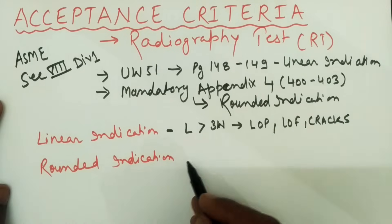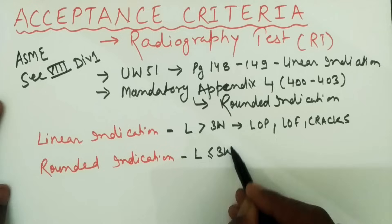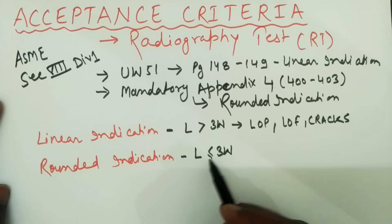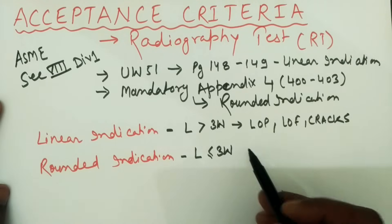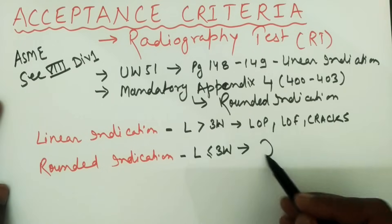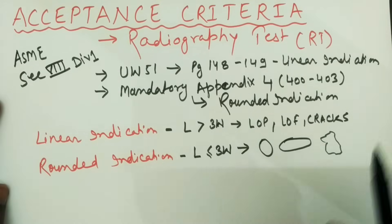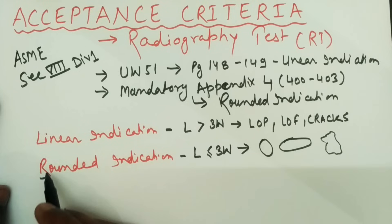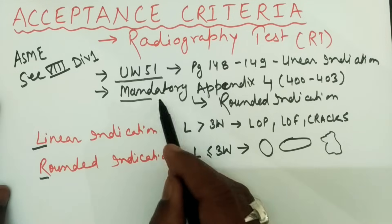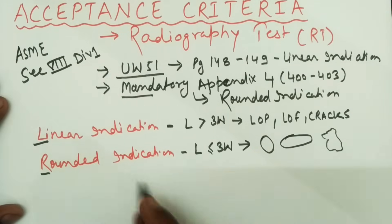In a rounded indication, the length remains equal to or less than three times the width of the indication. A rounded indication can be in any shape or size — it can be circular, elliptical, or any irregular shape. For linear indications refer UW-51, and for rounded indications refer Mandatory Appendix 4.